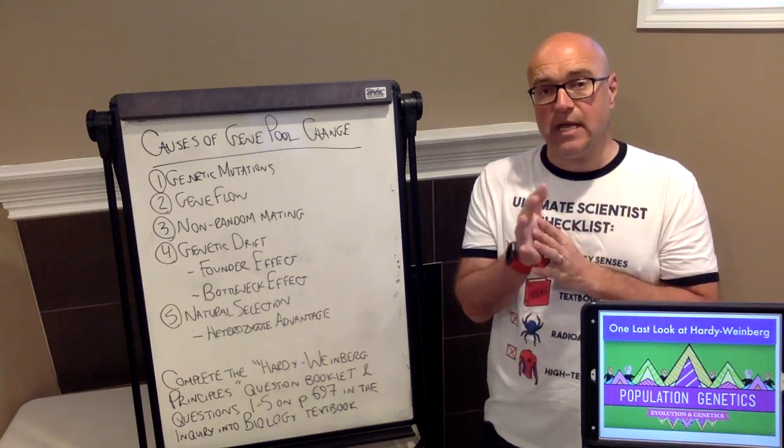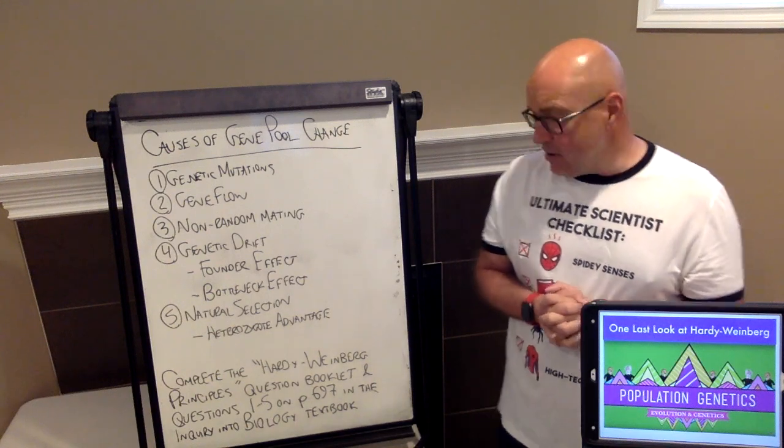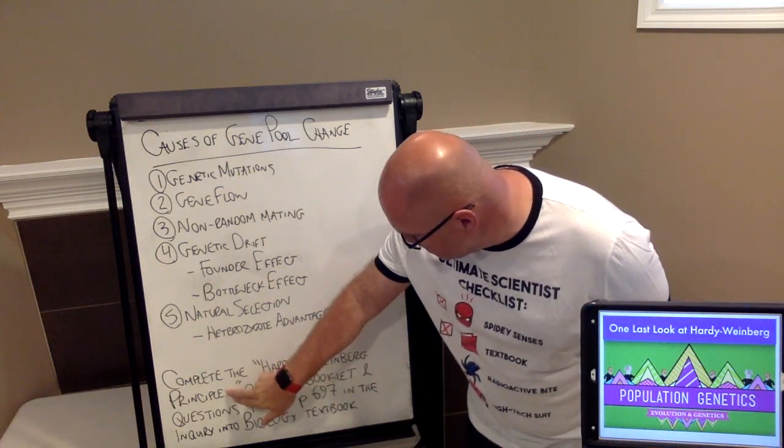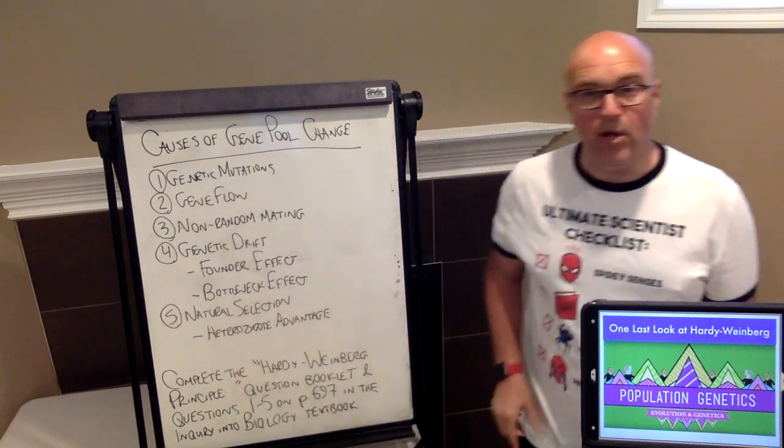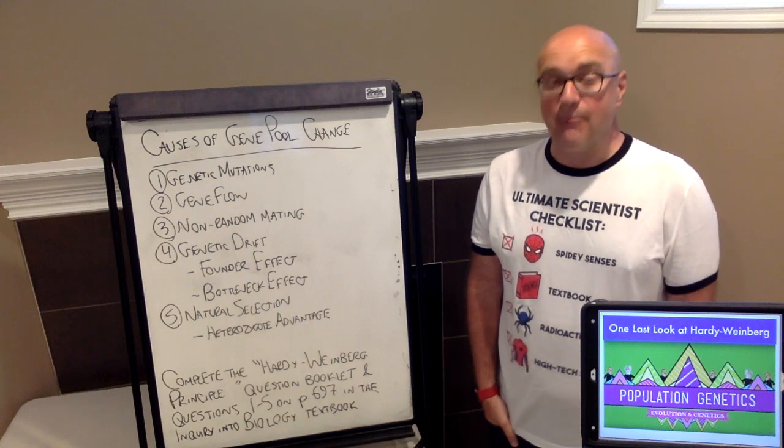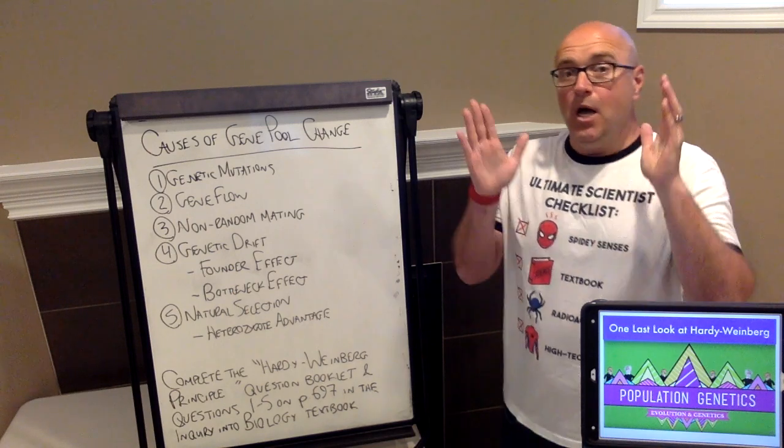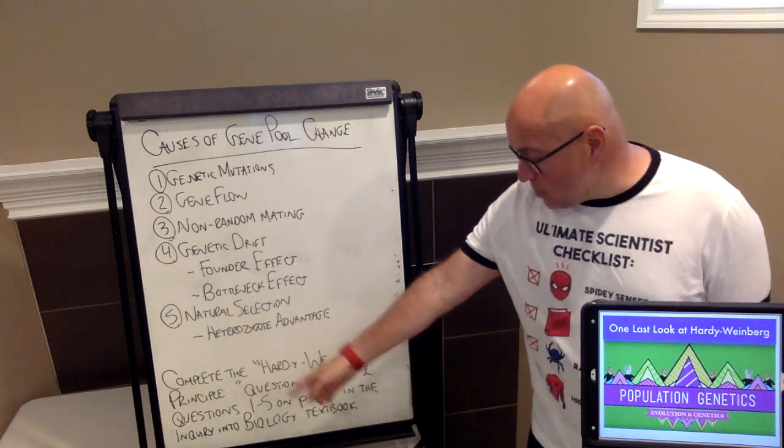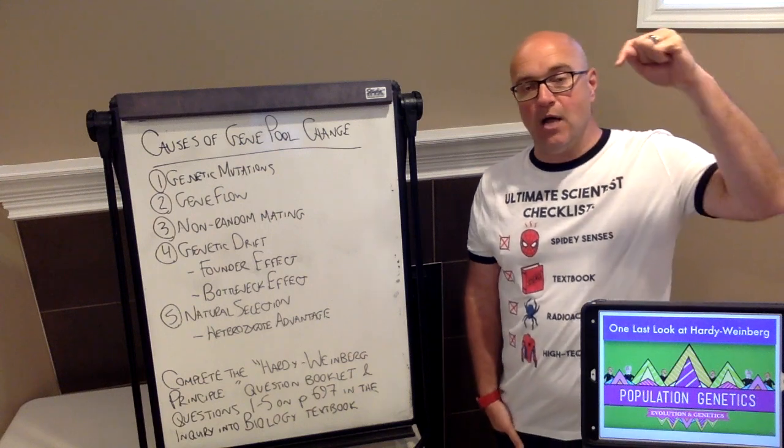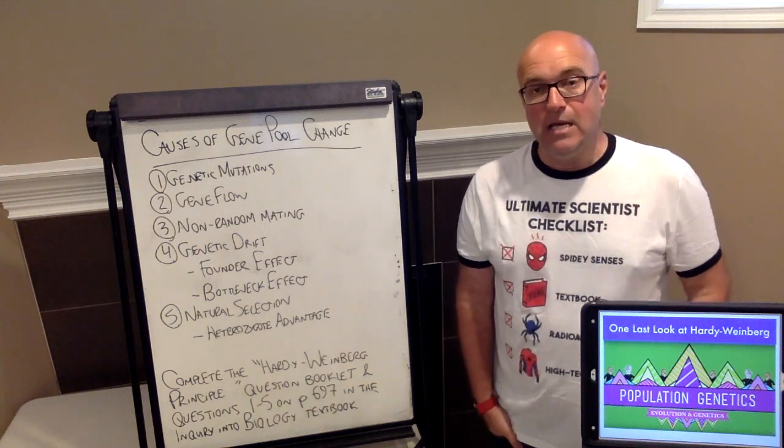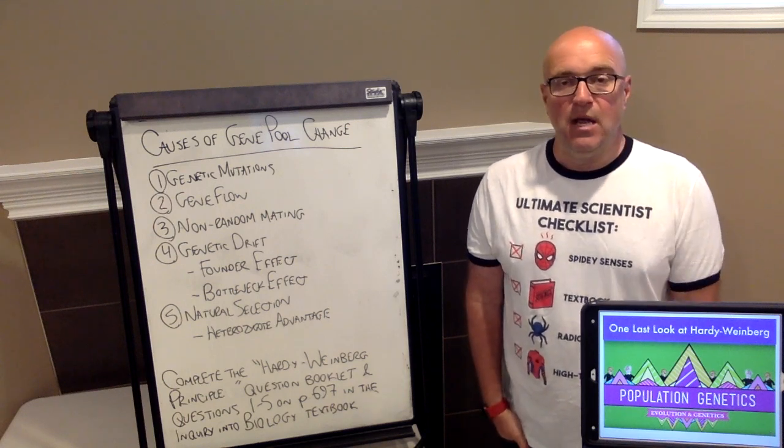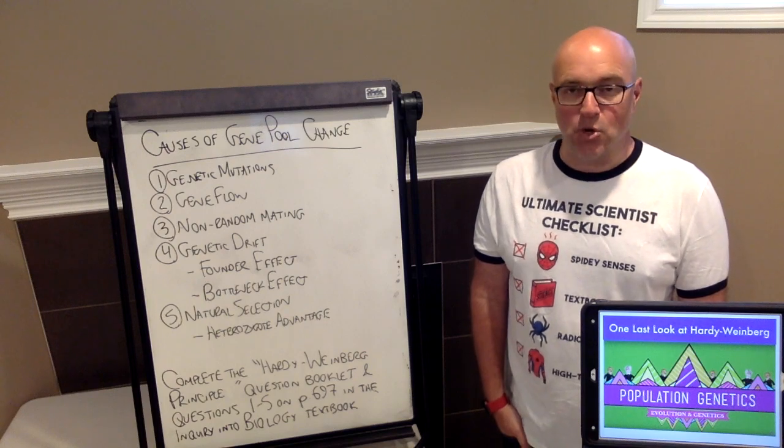Homework for tonight is there's two things. You're going to work on the Hardy-Weinberg principle question booklet. And I'm going to ask you to do questions out of the textbook. I want you to do questions 1 to 5 on page 697. That's going to cover the content that we talked about today about the causes of gene pool change. Thanks for tuning in, and we will see you real shortly. Take care.